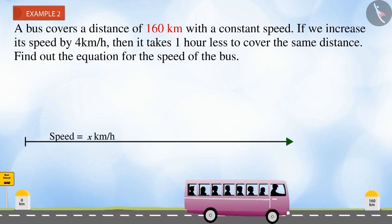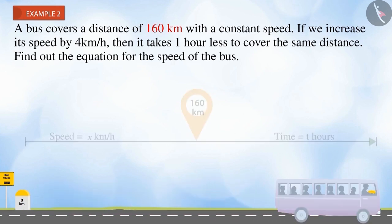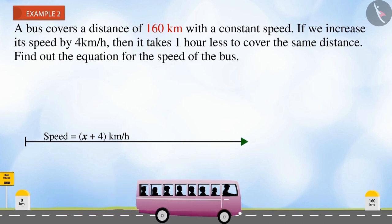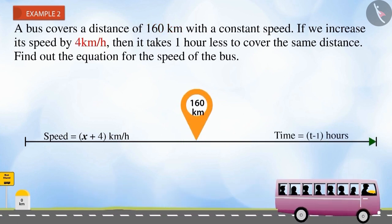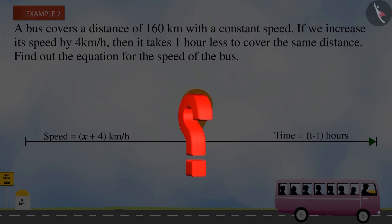A bus completes 160 km with a constant speed. If we increase its speed by 4 km per hour, then the bus takes one less hour to complete the journey. In this case, find out the equation to find out the speed of the bus. Can you find out the equation for speed of the bus?